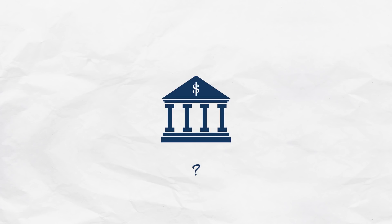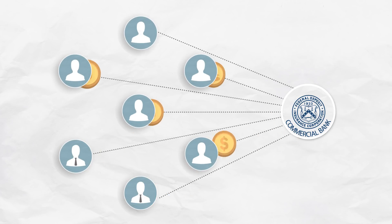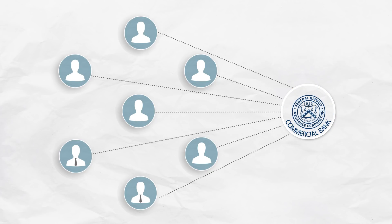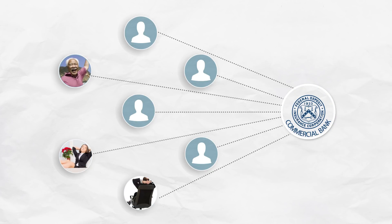What is a shadow bank? What you and I would commonly call just a bank is actually, more technically, a commercial bank. That means a bank that takes deposits from individuals and businesses, and it's insured by the government through the FDIC. Because of the government guarantee, depositors don't feel the need to run to the bank at the first sign of trouble and pull out their money.